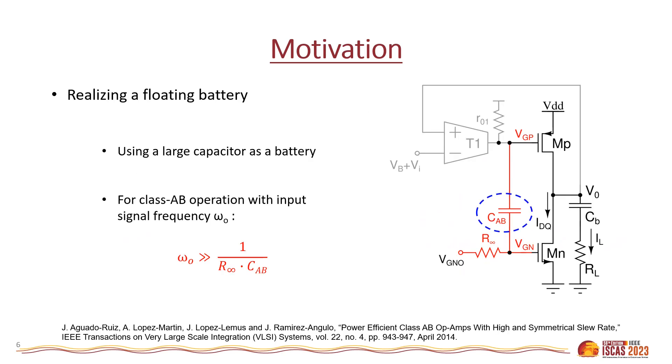In literature, several techniques have been reported to realize the floating battery. Figure shows one of the simplest topology where a large capacitor CAB is used to realize the battery. Compared to other topologies, it is power efficient because it operates with very low supply voltage and also it does not use any additional current-consuming path. The bias voltage VGN is supplied through a large resistor R-infinity. Due to the AC coupling nature of the architecture, class AB operation for the signal with minimum frequency omega nought is possible under the condition that omega nought is much greater than 1 upon R-infinity times CAB. For low-frequency signals like the ones in audio frequency band, this imposes a critical challenge on the requisite value of R-infinity and CAB.